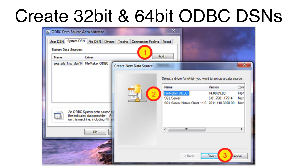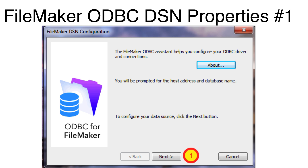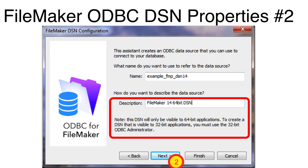Create a system DSN with both ODBC administrator programs. For this example, I am starting with the 64-bit ODBC administrator. Click the Add button, click the FileMaker ODBC driver, and then click the Finish button. Click the Next button on the following screens. Notice that this is the 64-bit ODBC administrator, and that the text states that an additional DSN needs to be created for 32-bit applications.